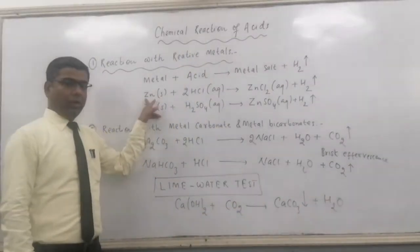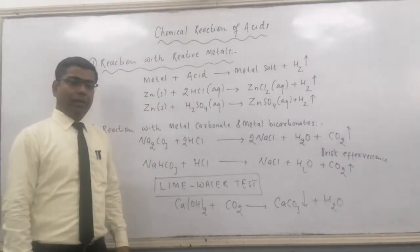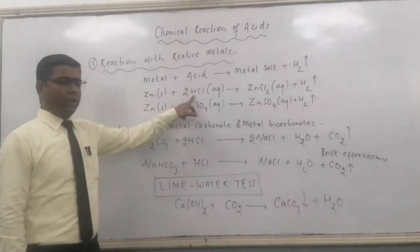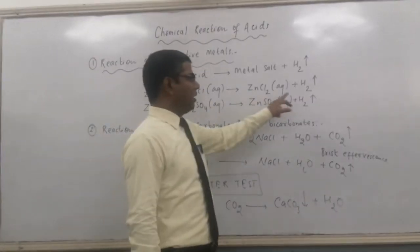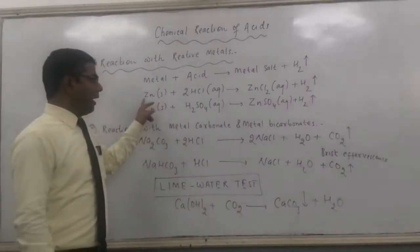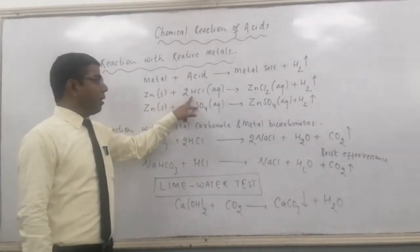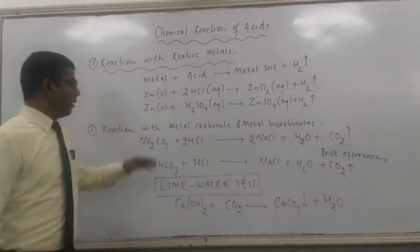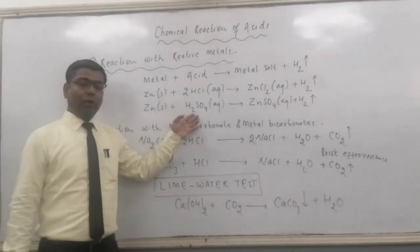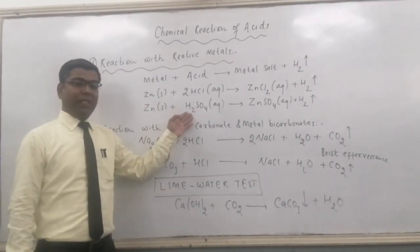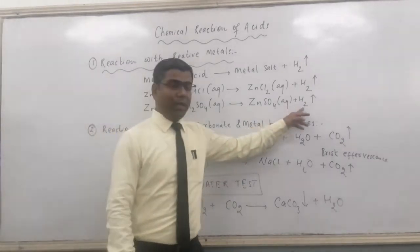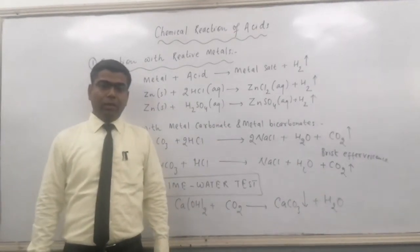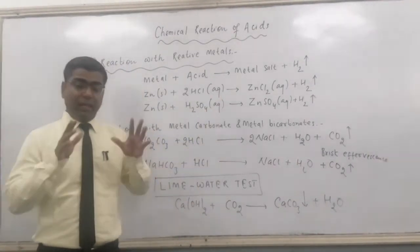Here we have one example equation. Zinc with hydrochloric acid: zinc, being more reactive than hydrogen, will displace hydrogen from the acid. The displaced hydrogen will be released as H₂ gas, and zinc will combine with Cl⁻ to form zinc chloride. Similarly, zinc with sulfuric acid: zinc displaces hydrogen, H₂ gas is released, and zinc combines with sulfate to form zinc sulfate.